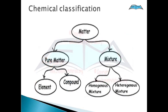Chemical classification: as we have already discussed, the chemical classification of matter tells about its chemical nature — how it is made, what elements are required to build a matter. Matter is divided into two categories on the basis of chemical classification: pure substance and mixture. Pure substance may be an element or a compound, whereas mixture may be homogeneous or heterogeneous.